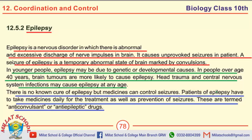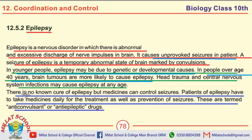Moving towards the important MCQs. Epilepsy causes unprovoked seizures in patients. In younger people, epilepsy may be due to genetic or developmental causes. In people over age 40 years, brain tumors are more likely to cause epilepsy. There is no known cure for epilepsy, but medicines can control seizures. The medicines taken for the treatment of epilepsy are termed as anti-convulsant or anti-epileptic drugs.